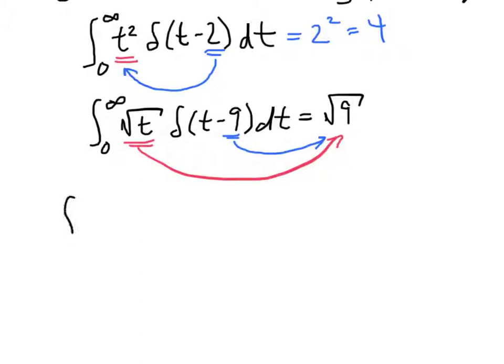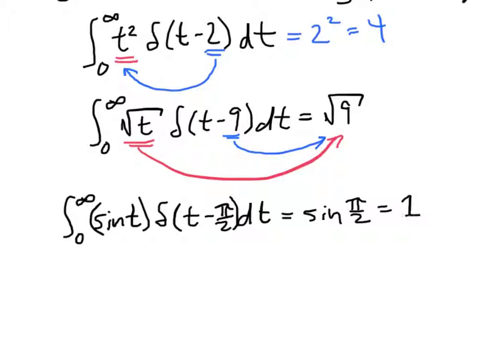Suppose we were looking at the integral from 0 to infinity of sine t times delta of t minus pi over 2 dt. This means that we simply evaluate sine at pi over 2, which is 1. So that's the behavior of the delta function that we're interested in, the delta quote function. It's not actually a function again.